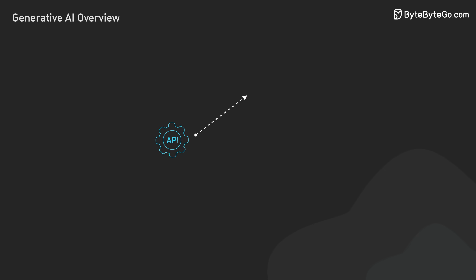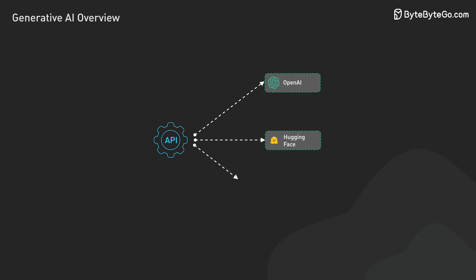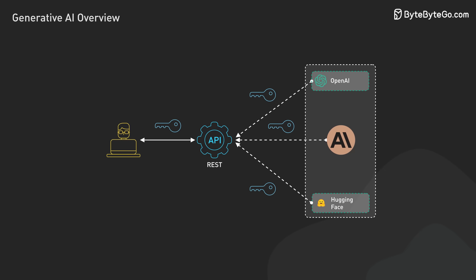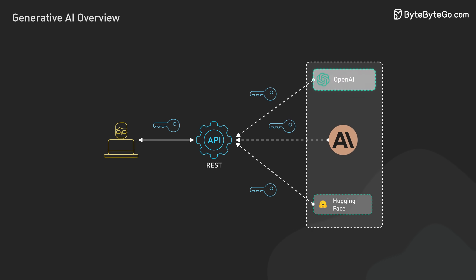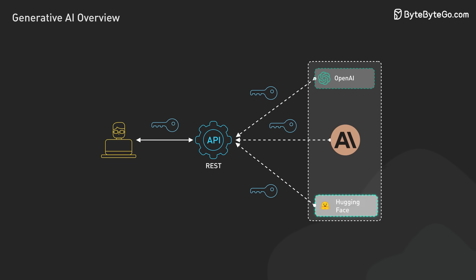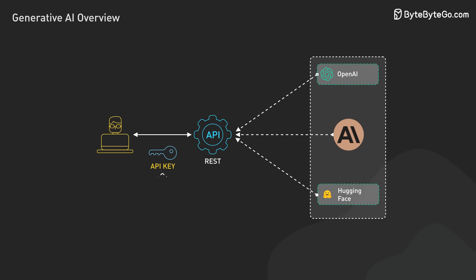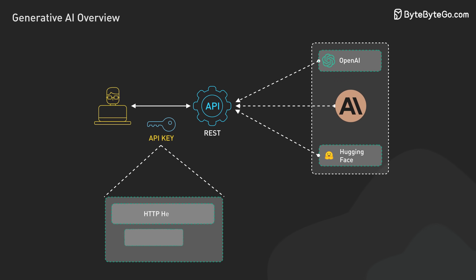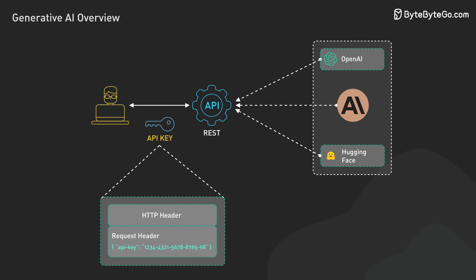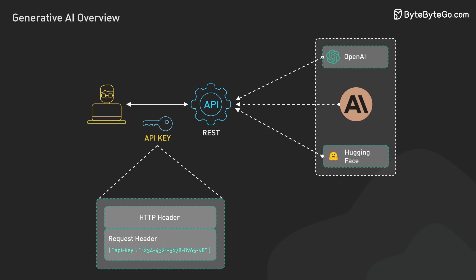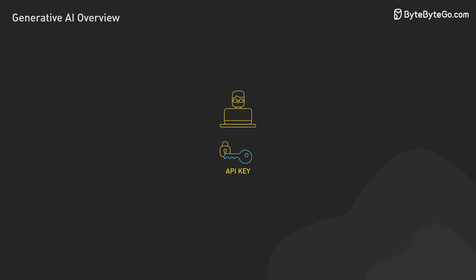Most generative AI models are accessible through REST APIs. To get started, you'll need to obtain API access from the desired platform, such as OpenAI, Anthropic, and HuggingFace. Once you have your API key, you can authenticate your requests to the Gen AI model endpoints. Authentication usually involves providing the API key in the request headers or as a parameter. It's very important to keep your API key secure and avoid sharing it publicly.